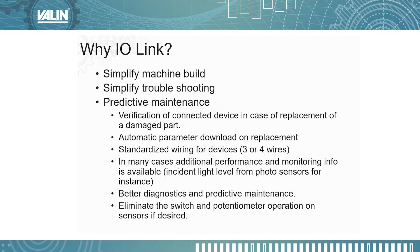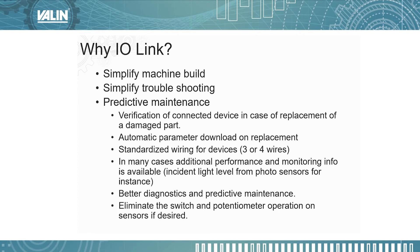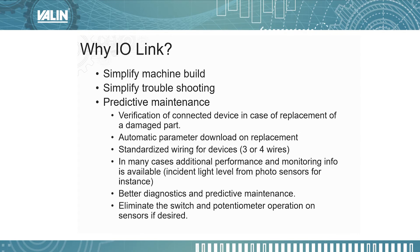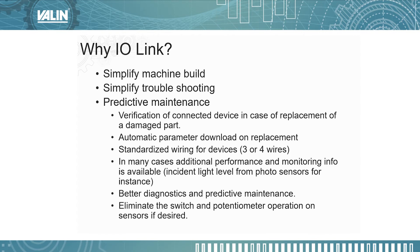So why do you want to use IO-Link? For one, it can simplify the machine build. When building machines, you might have sensors or products from different vendors with their own specific wiring diagrams. If you're using IO-Link, all IO-Link-enabled devices connect in the same fashion. You have either three or four wires, and there are three or four connection points on the IO-Link unit — so every three-wire IO-Link device connects the same way, and every four-wire device connects the same way.